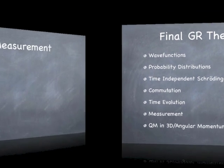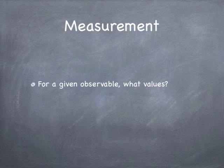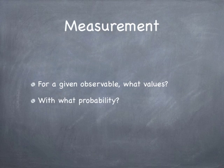So let's start talking about measurement. For a given observable, what values are possible? The answer is the eigenvalues of the operator that represents that observable are the only things you'll ever measure for that observable. With what probability will you measure these observables? The answer is at any given moment, the probability of measuring any particular eigenvalue is the amplitude of that eigenvector in the overall quantum state. The probability is the amplitude squared.